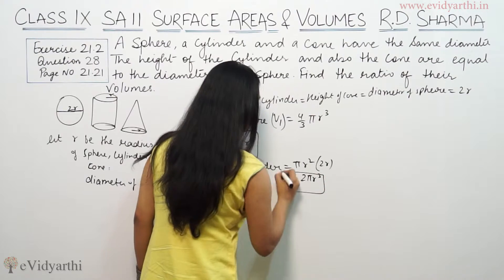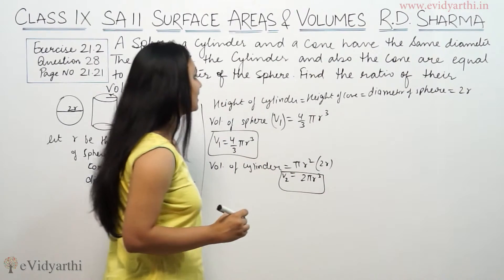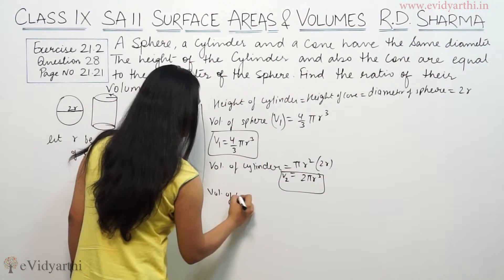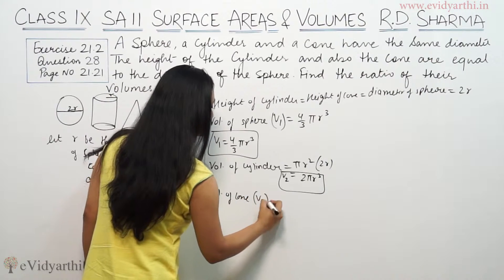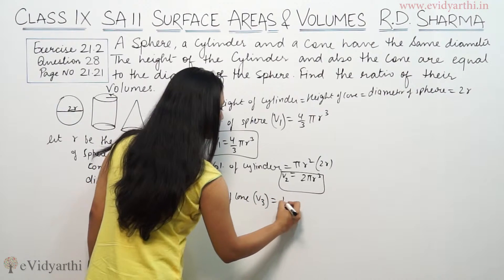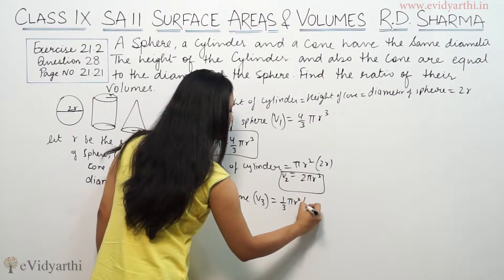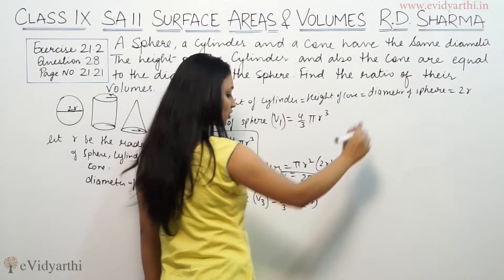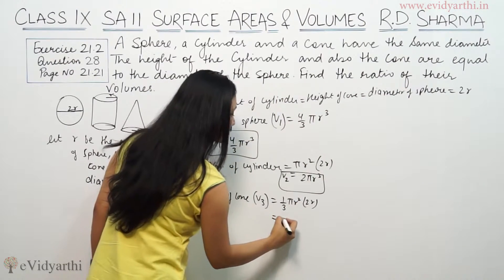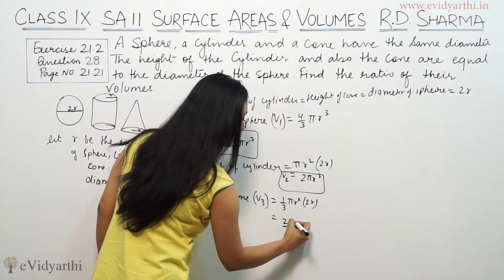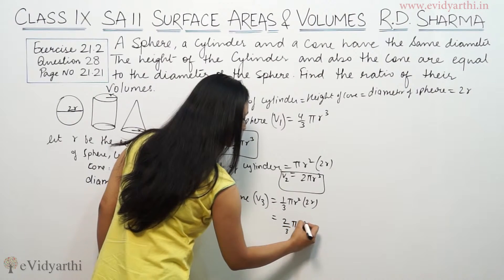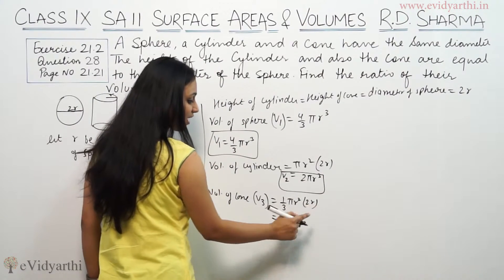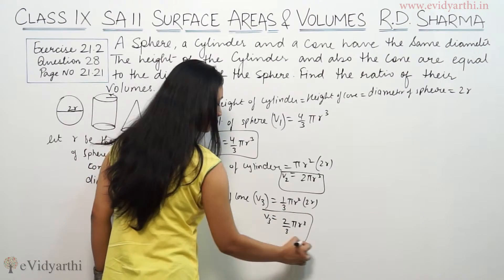Similarly, the volume of the cone, V3, equals 1/3 π r² h. The cone's height is also 2r, so V3 = 1/3 × π r² × 2r = 2/3 π r³.